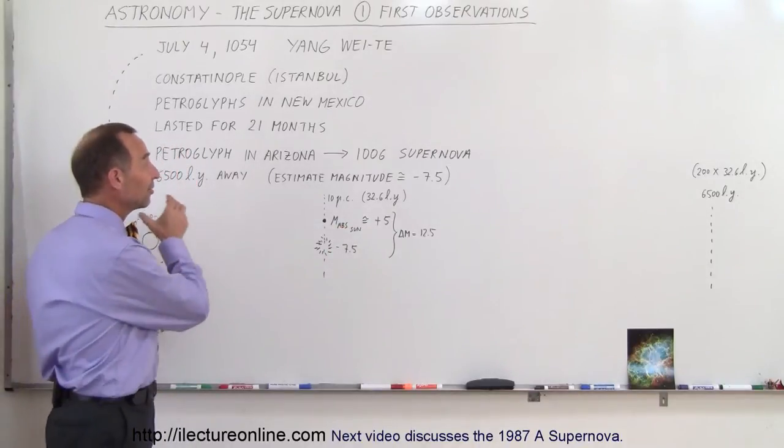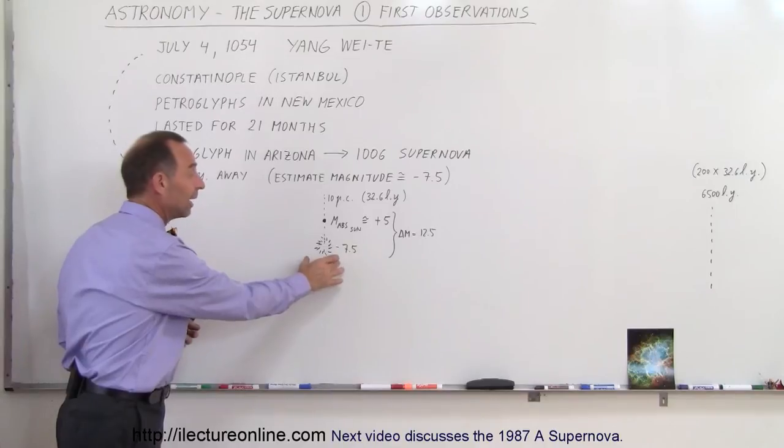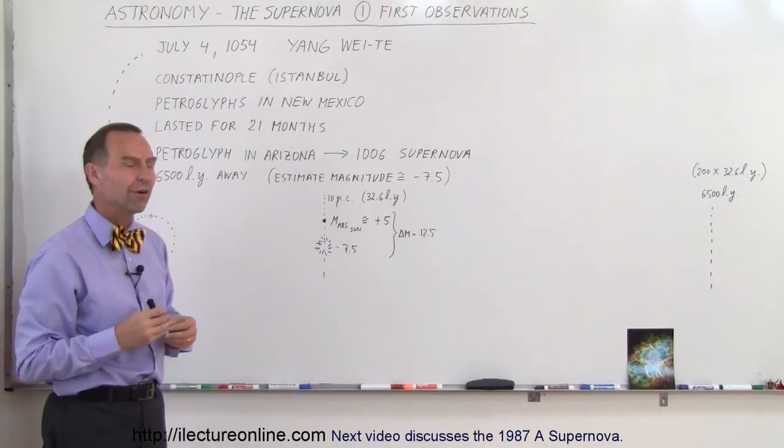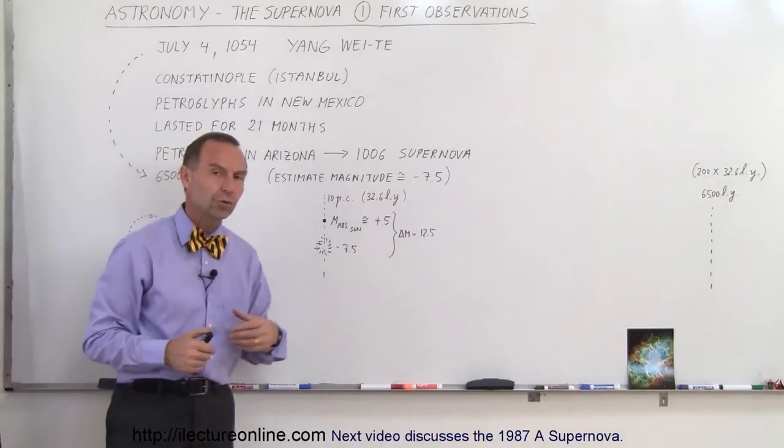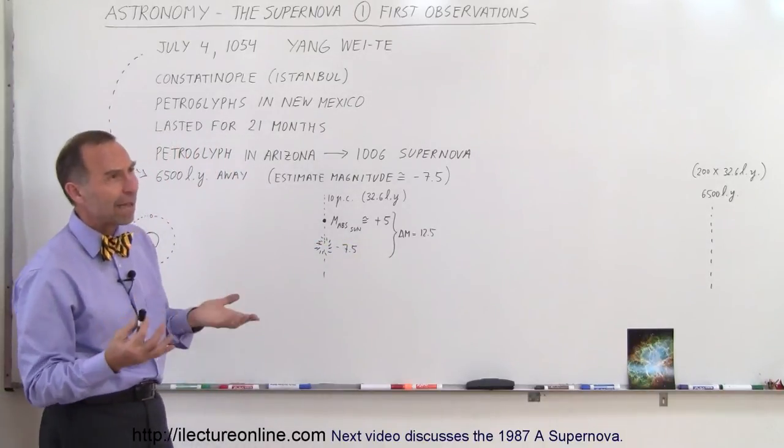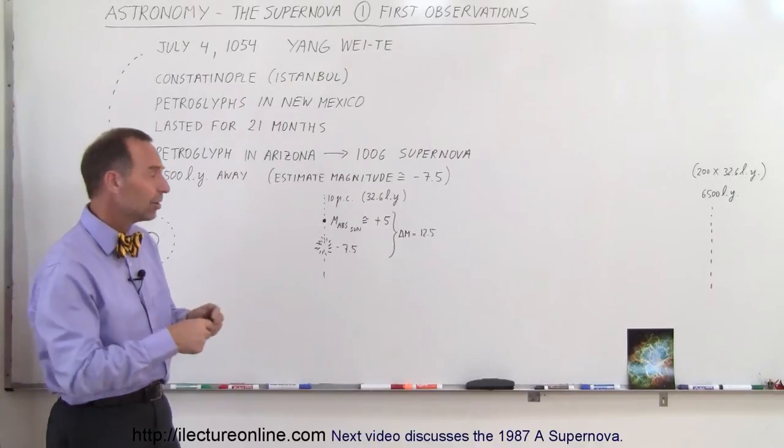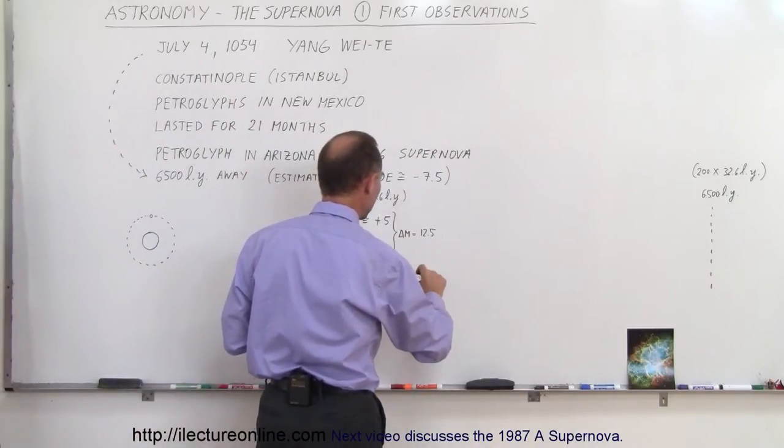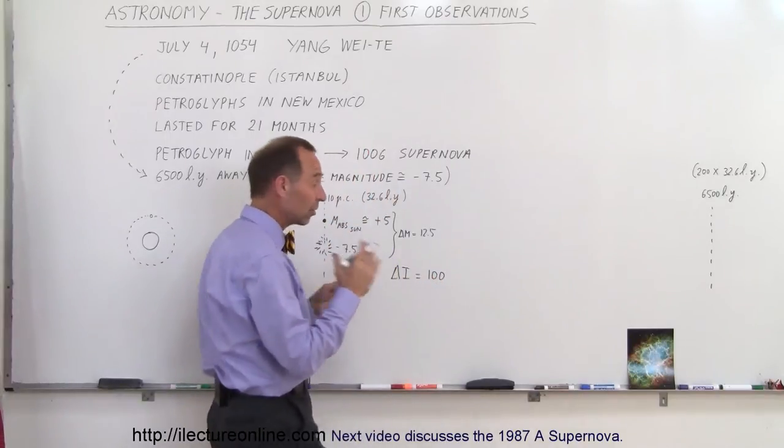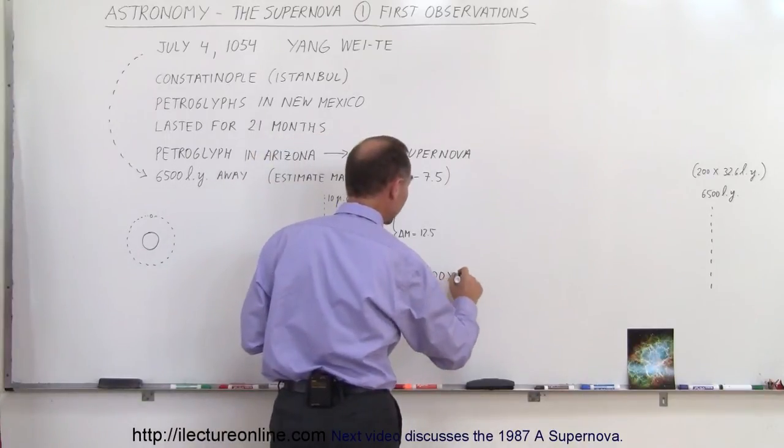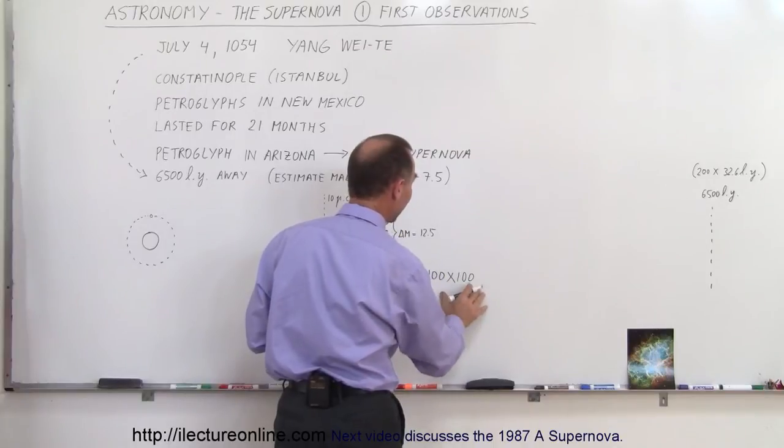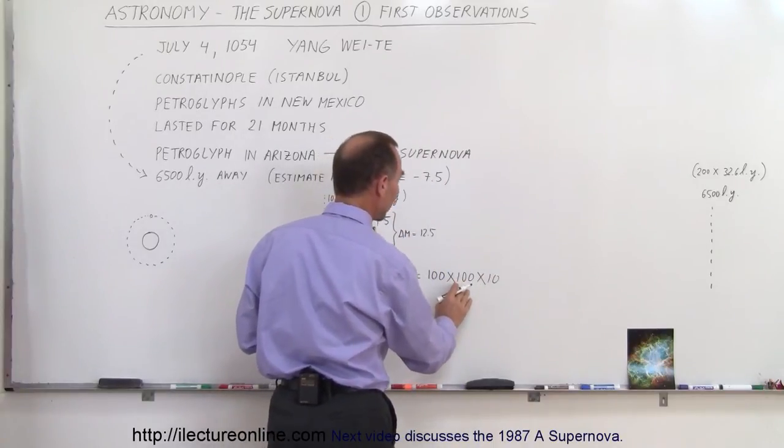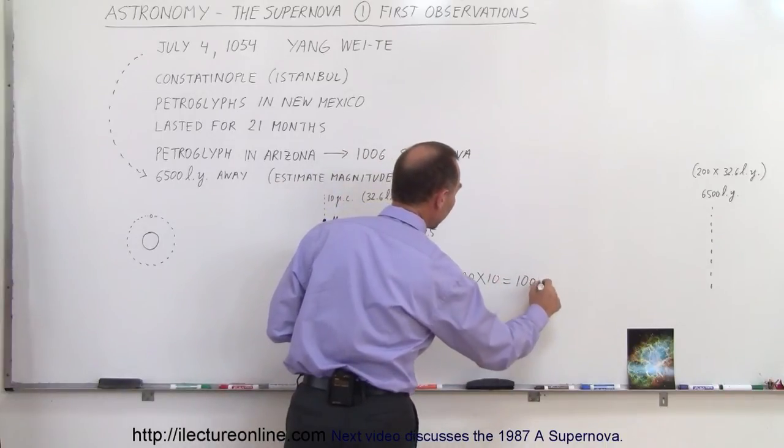So, if we now were to take that very same object and place it there 10 parsecs away, it would have a magnitude of minus 7.5. Wow! That is 12 and a half magnitudes brighter, and 12 and a half magnitudes is about, let's see, 100 times 100. For every 5 magnitudes something is 100 times brighter, so 100 times 100, that's 5 plus 5, that's 10, plus about another 10, so 100 times 100 is 10,000, times 10 is 100,000 times brighter.